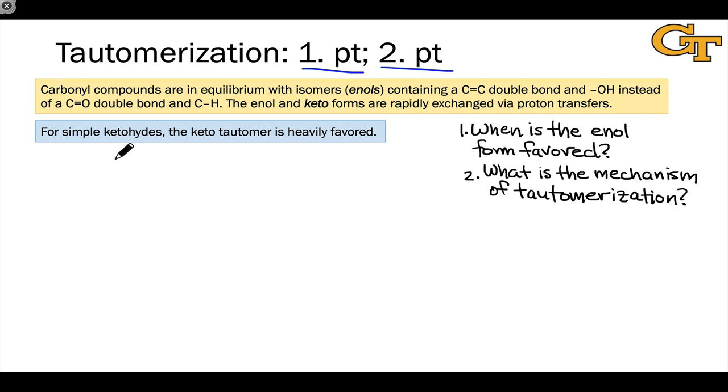Before diving into the mechanism though, let's ask about this question of when is the enol form favored? The fact that everything we've seen to date involves looking at just the keto form and not considering the enol form at all suggests that the keto form for simple ketones and aldehydes is heavily favored and this is absolutely true. This means that if we were to draw reversible reaction arrows for the interconversion of a keto and enol form of a simple ketone, the arrow pointing to the keto side would be much longer than the arrow pointing to the enol side.